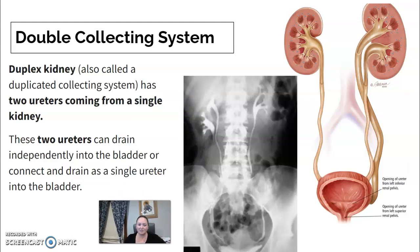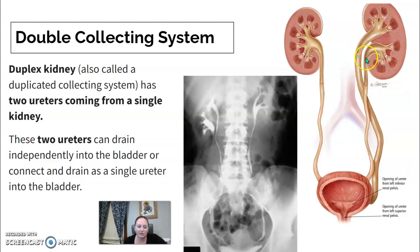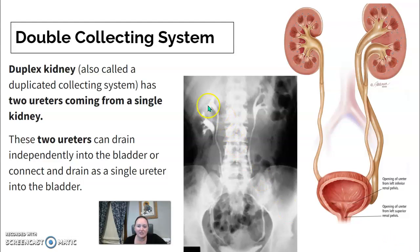A double collecting system — also called a duplex kidney — is when there are actually two ureters coming from a single kidney, both draining into the bladder. It can be seen on IVU and VCUG imaging. These anomalies are interesting findings when encountered in practice.